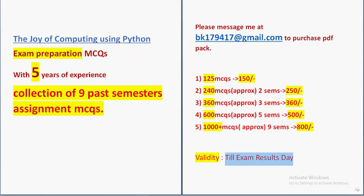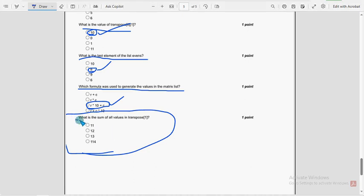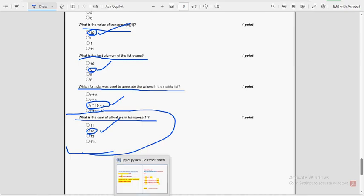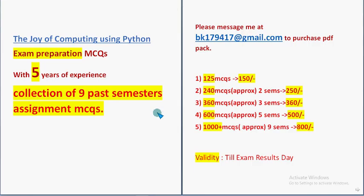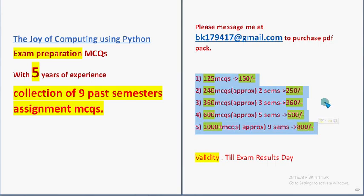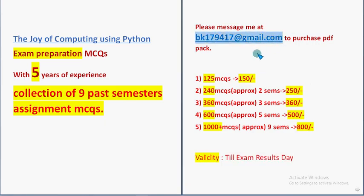Now for the last question — the thirtieth: what is the sum of all values in transpose[1]? The second option — 12 — is the probable solution. These are the most probable solutions for the week 4 assignment of Joy of Computing using Python. Hope this video was helpful. Please subscribe, like, and share with your friends and classmates. Mail bk179417@gmail.com for the MCQ packs. Validity is till the exam results day. Until the next video, goodbye and thank you.